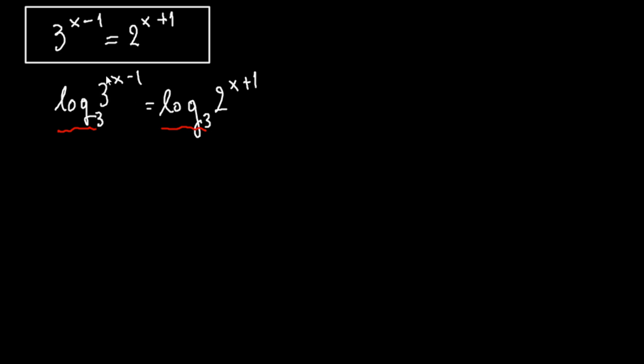Now using the properties of the logarithms we can take this power and break it down here. So this becomes x minus 1 times log 3 with base 3 equals to x plus 1 times log 2 with base 3.